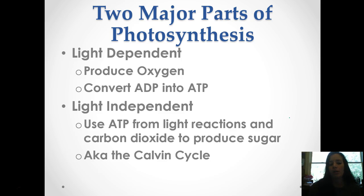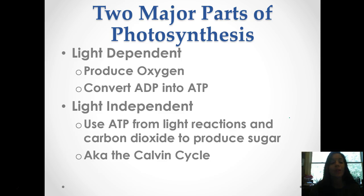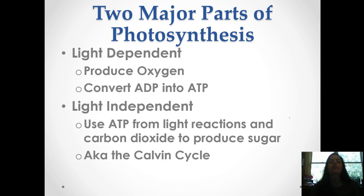There are two major parts of photosynthesis: the light dependent reaction and the light independent reaction. The light dependent reaction is where oxygen is produced, but that's only a byproduct of this process. It's also where ADP is converted into ATP, which is a big energy source for the light independent. The light independent uses this ATP to produce sugar or glucose from carbon dioxide. The light independent reaction is also where the Calvin cycle takes place.